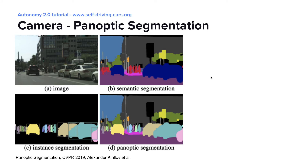Another type of task is panoptic segmentation. This task produces a per-pixel classification for each type of object and for every instance of an object, fusing semantic and instance segmentation. Standard methods for semantic segmentation such as DeepLab and instance segmentation such as Mask RCNN can be fused together to produce state-of-the-art panoptic segmentation results.